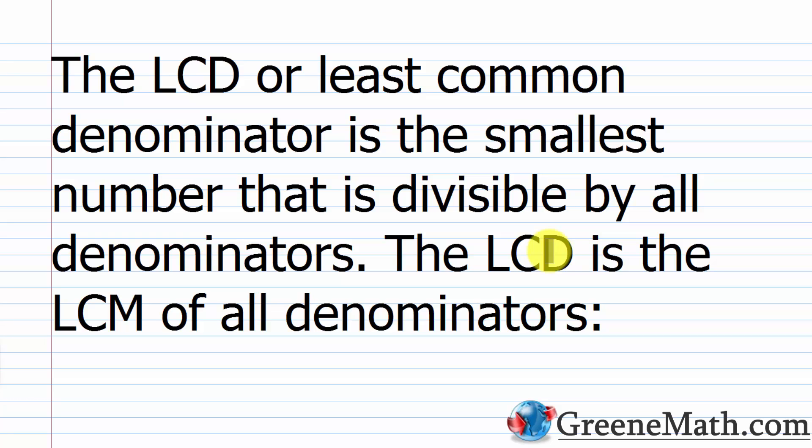The greatest common factor and the greatest common divisor are the same thing — if something is a factor, it's also a divisor. We're looking for the largest factor of a group of numbers. The key difference is that the GCF or GCD is generally a smaller number, while the LCM or LCD is a larger number.